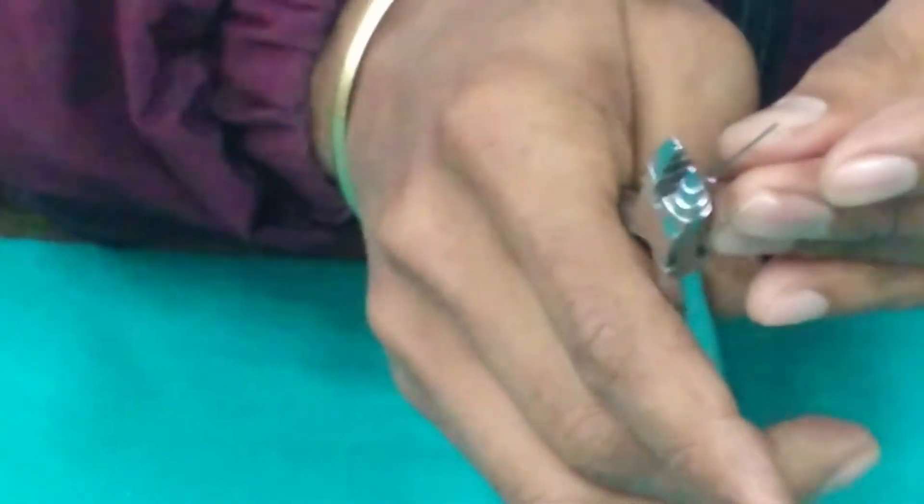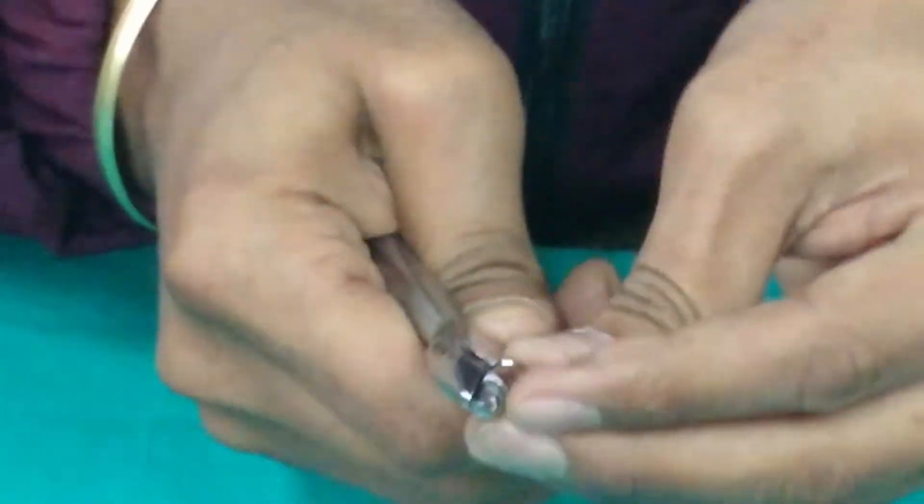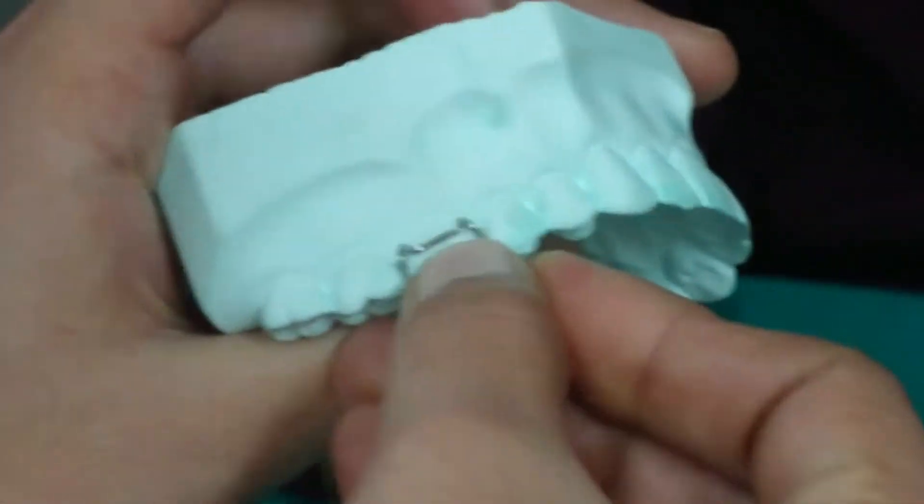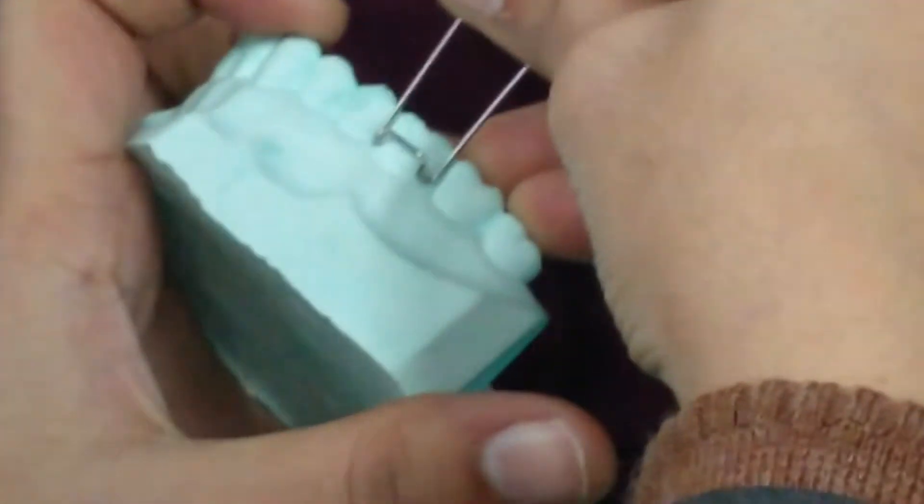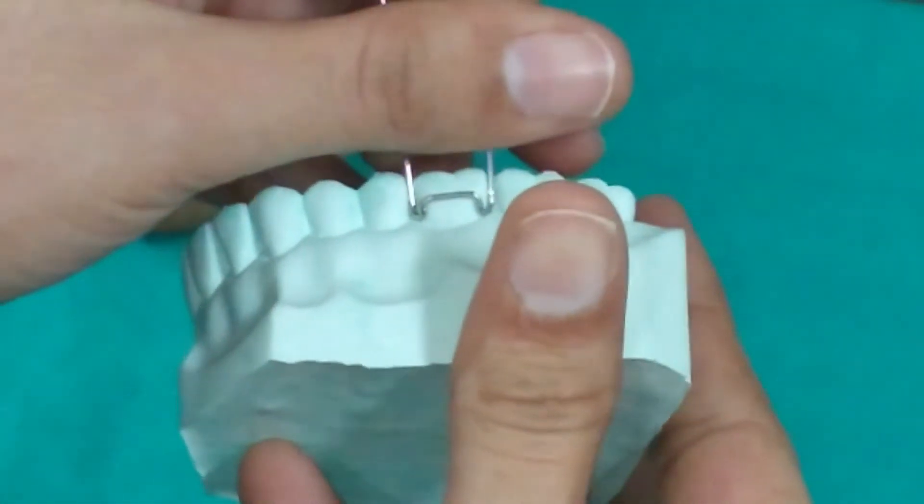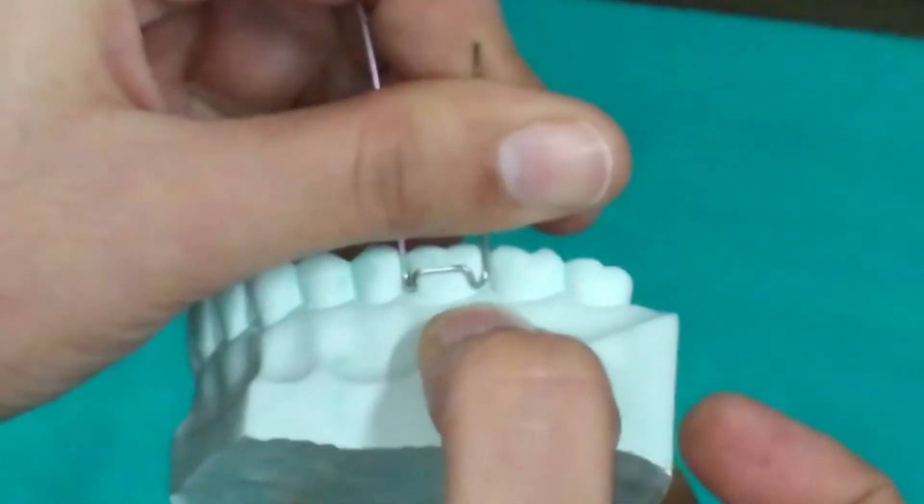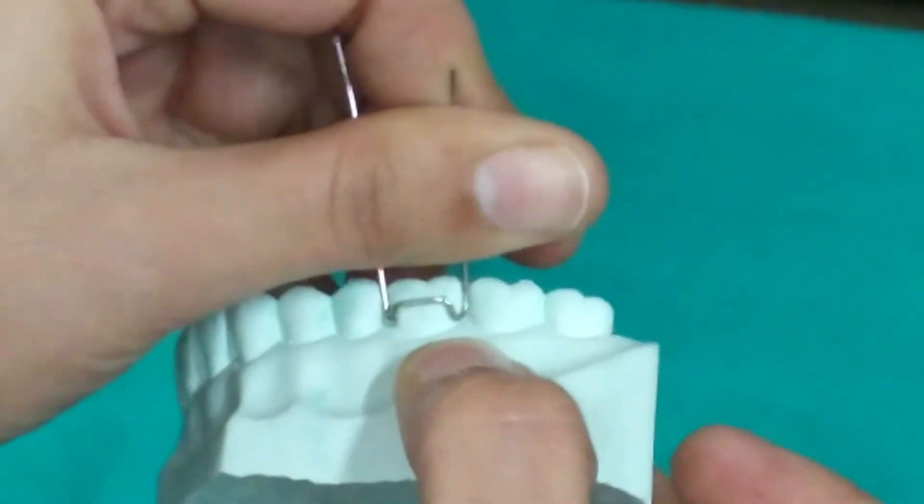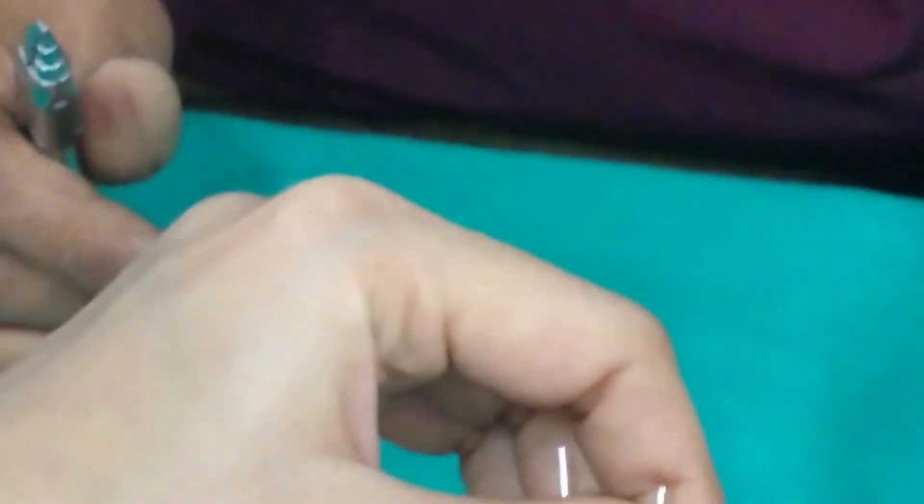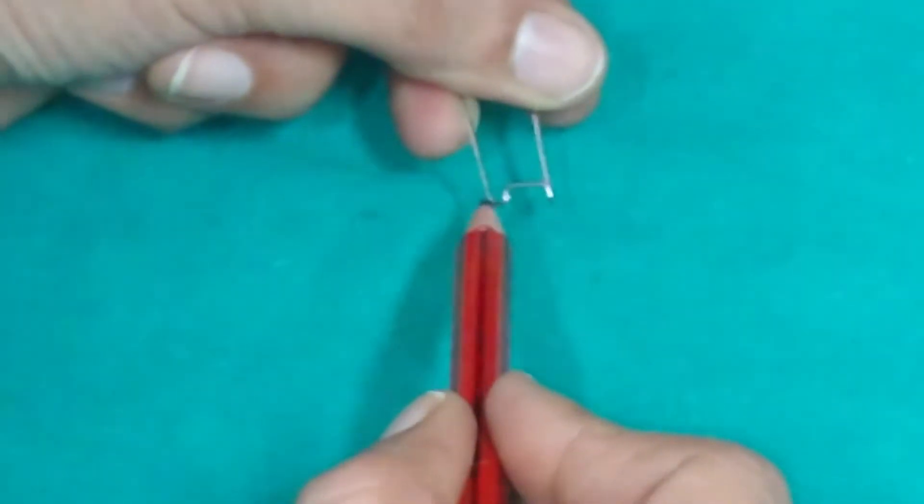Now, we will bend these loops at 45 degrees to the bridge. These two arrowheads engage the mesial and the distal proximal undercut of the molar.